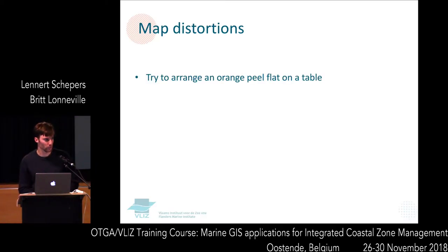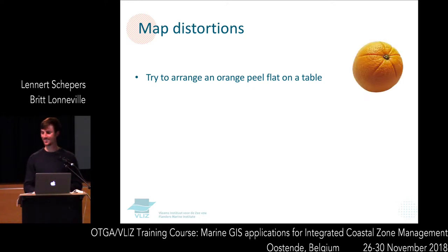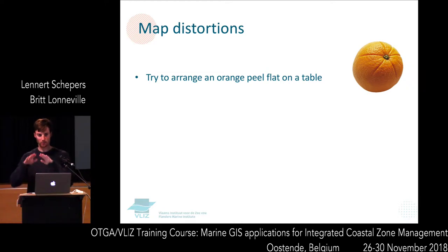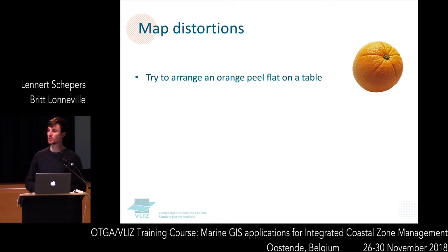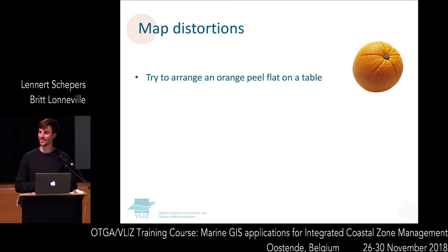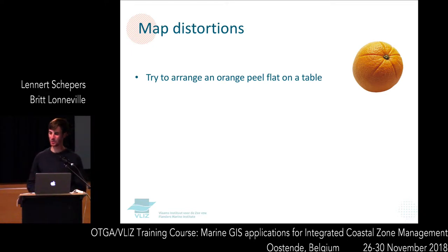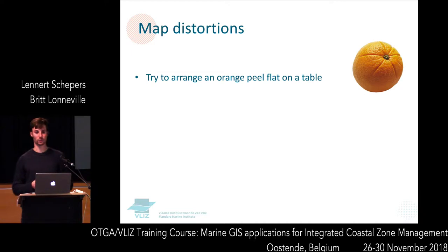Who has ever tried to peel an orange in one piece? Could you put that peel flat on the table? No — you cannot put it perfectly flat in one piece. That is the problem we face: we want to visualise a sphere or ellipsoid on a flat surface, and that is not possible without errors. Every map has a distortion.